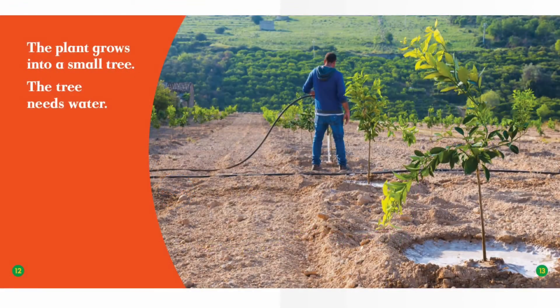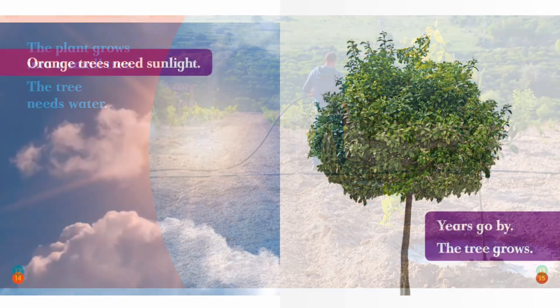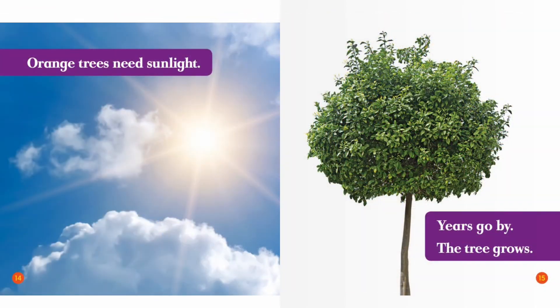The plant grows into a small tree. The tree needs water. Orange trees need sunlight. Years go by. The tree grows.